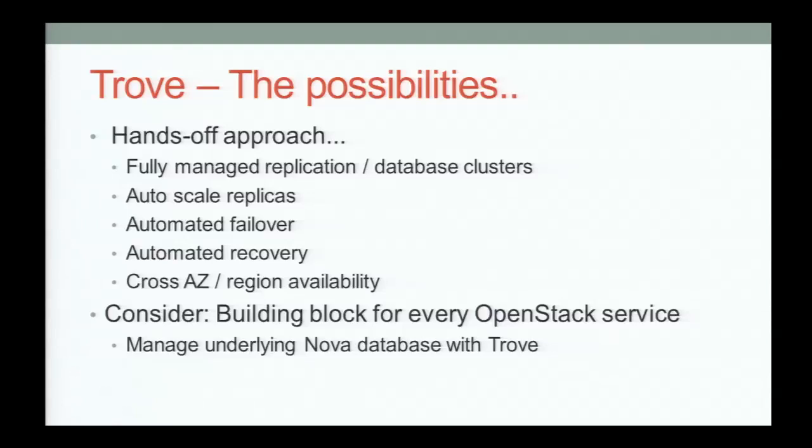Automated failover — if your node goes down at 3 a.m., you don't want to deal with a pager duty call or waking someone up from operations. Automated failover and recovery is part of the vision of Trove. We want it to be smart enough to know that if a slave goes down, you can grab a backup, re-sync it, and continue moving. Cross-AZ region availability — since we're a black box to OpenStack, there's no requirement preventing us from talking to more than one OpenStack installation, so you could have a replica at HP of an instance you're running at Rackspace.